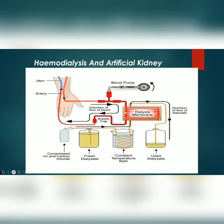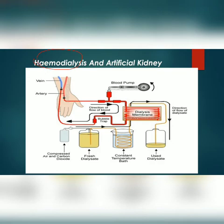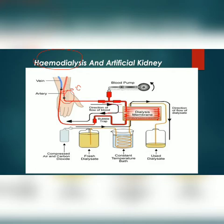Malfunction of the kidneys can lead to accumulation of urea in the blood, known as uremia. Uremia is very harmful and may lead to kidney failure. In chronic kidney failure, the urea can be removed by a process known as hemodialysis. In hemodialysis, blood is taken out from an artery of a patient, cooled at zero degrees Celsius, mixed with an anticoagulant like heparin, and then pumped into the apparatus known as the artificial kidney.